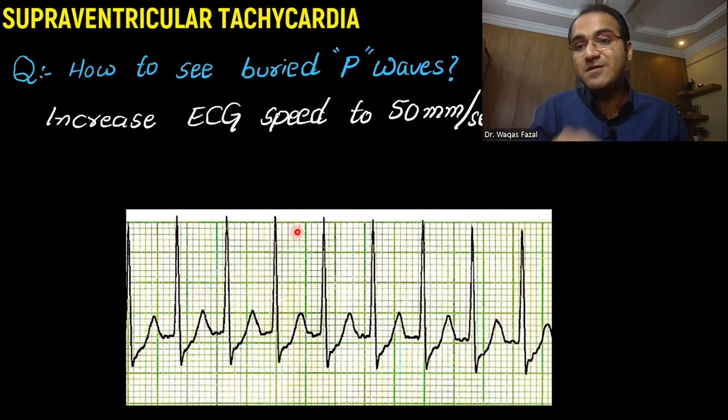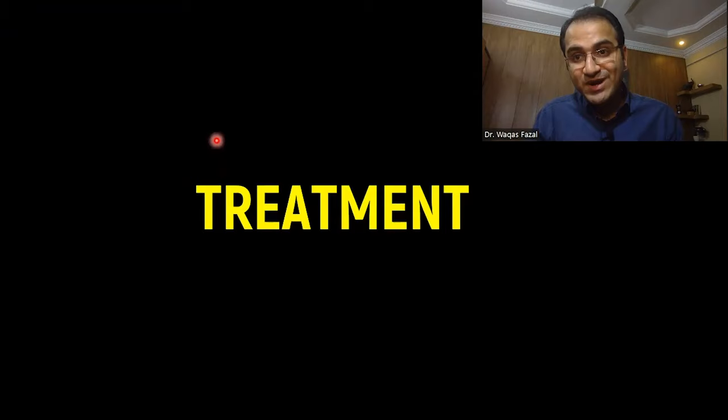For management, check vitals and oxygen saturation. If saturation is less than 90%, give oxygen. Gain IV access, perform ECG, and assess for adverse signs: shock, chest pain, ischemia on ECG, or signs of heart failure. If any adverse signs are present, the patient is deteriorating and needs rapid management.